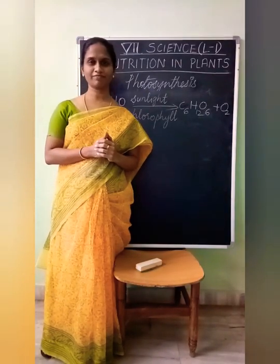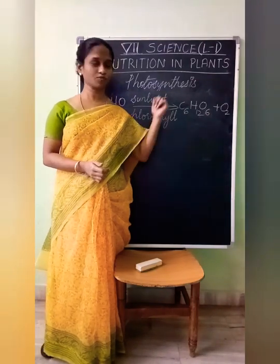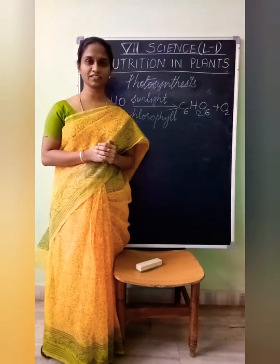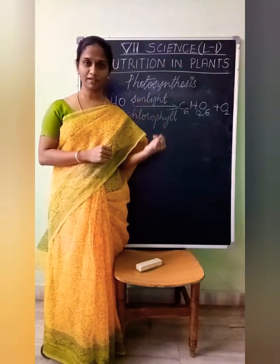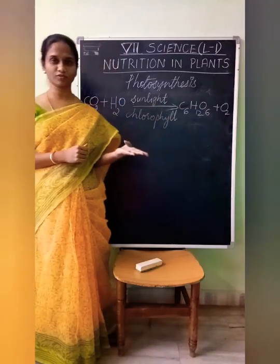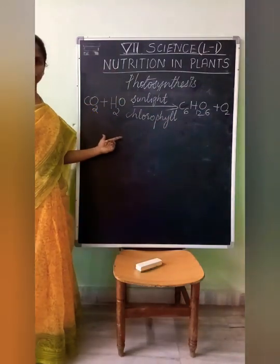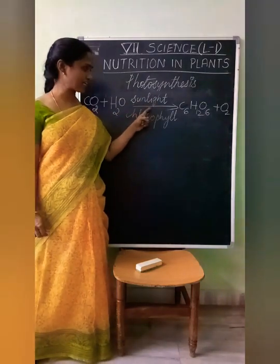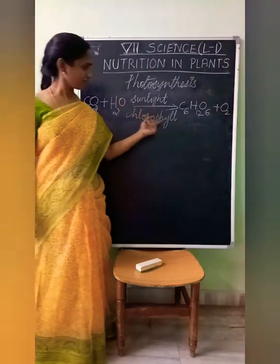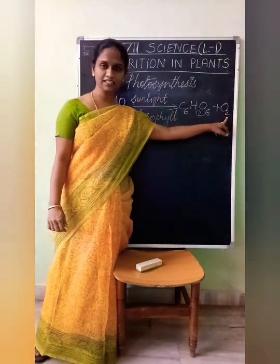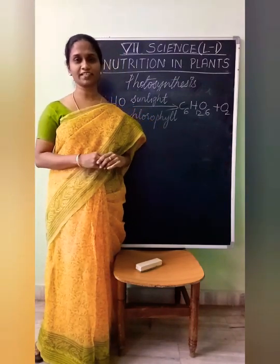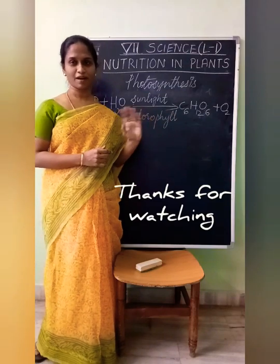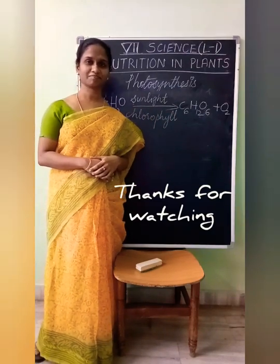Let's recapitulate what we have learned. In today's session, we learned about photosynthesis and what is required for it — carbon dioxide, water, sunlight, and chlorophyll. We also learned the equation: carbon dioxide plus water, in the presence of sunlight and chlorophyll, produces food and releases oxygen. That's all for now, children. Bye-bye, have a nice day!